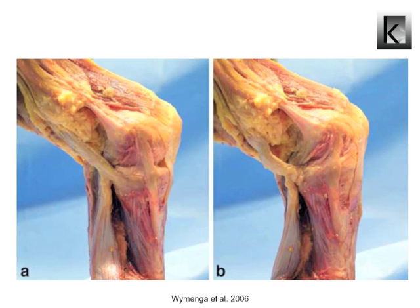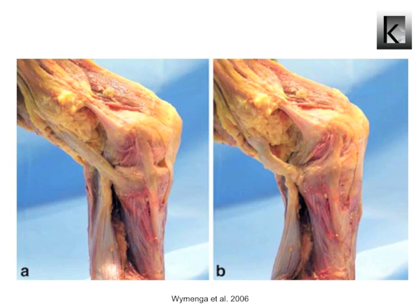The distal division of the superficial MCL has been reported to be a primary knee stabilizer to external rotation. In addition, it is theorized that the more medial superficial MCL fibers, which do not attach directly to the proximal tibial attachment, become less taut during external rotation loads, resulting in a decrease in force on the proximal division of the superficial MCL. Subsequently, the increased loads not absorbed by the proximal MCL are likely diverted to the deep MCL or the cruciate ligaments.